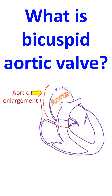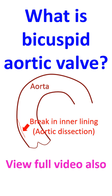Aortic enlargement carries a small risk of tears developing in its wall in the long run. If a tear is only in the inner layer, it is called aortic dissection, which is a serious condition, as it can progress along the extent of the aorta and compromise blood flow to vital organs like the brain and the heart itself.